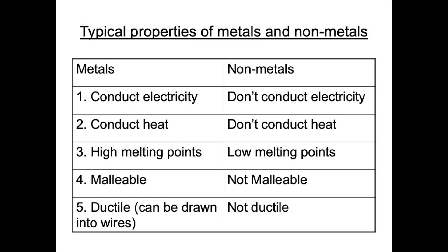Non-metals tend to have the opposite properties. They're insulators, they don't conduct electricity, they don't conduct heat, they have low melting points, and they are not malleable and not ductile.